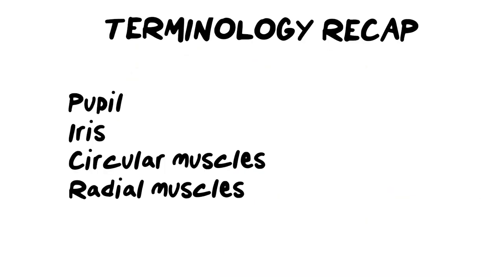As always, I like to wrap up these lessons with a very quick terminology recap. These are the four main words we need to take away from here. Number one is the pupil — the pupil is that black open hole into your eye, and it allows light to enter your eye so it can go through your lens to your retina.